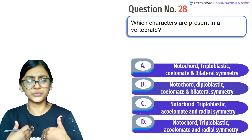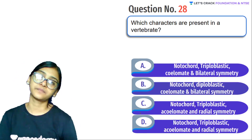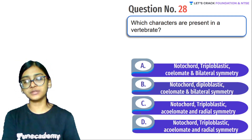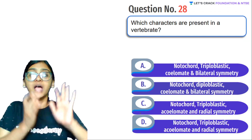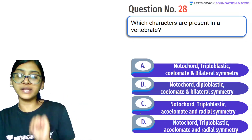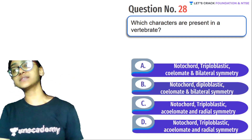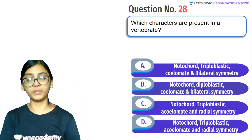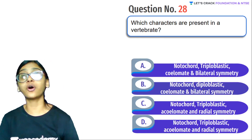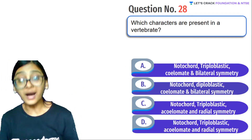Next question: Which characters are present in vertebrates? The presence of notochord is the very first feature. All organisms from Platyhelminthes onwards are triploblastic (three body layers). From Annelids onwards including annelids, all organisms are coelomate. Since vertebrates come after non-vertebrates, and non-vertebrates themselves already have notochord, triploblastic, and coelomate features, vertebrates must have all of these. The answer includes notochord, triploblastic, coelomate, and bilateral symmetry.